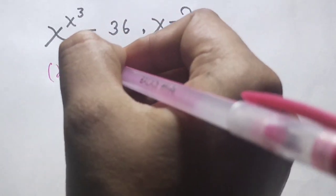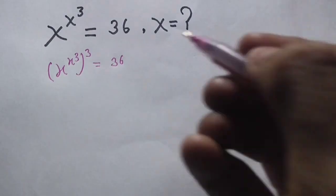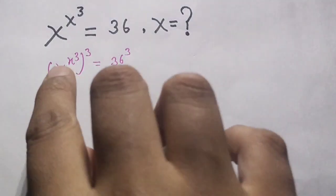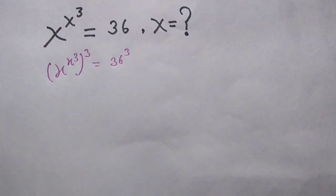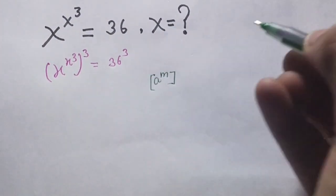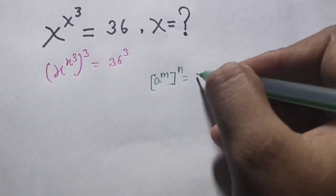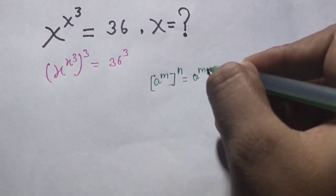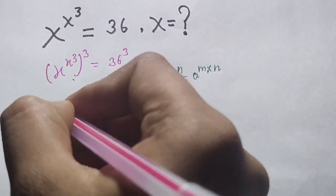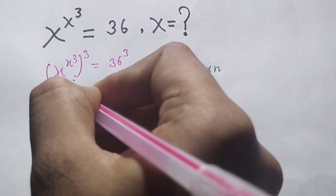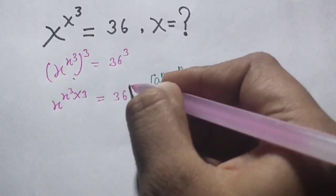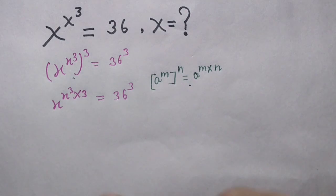We have the power equal to 36 power 3. A famous identity is used here: a power m, whole power n. So the powers are multiplied with each other. Using this identity, x into 3 equals 36 power 3.